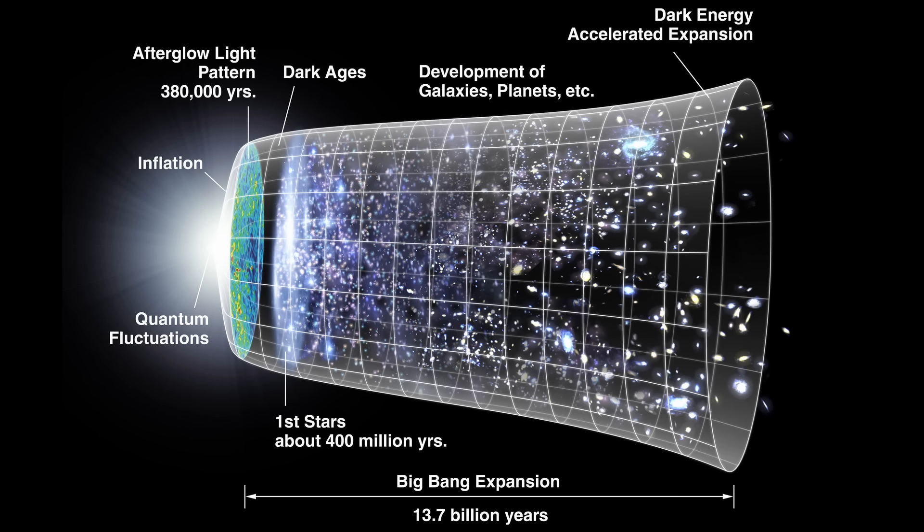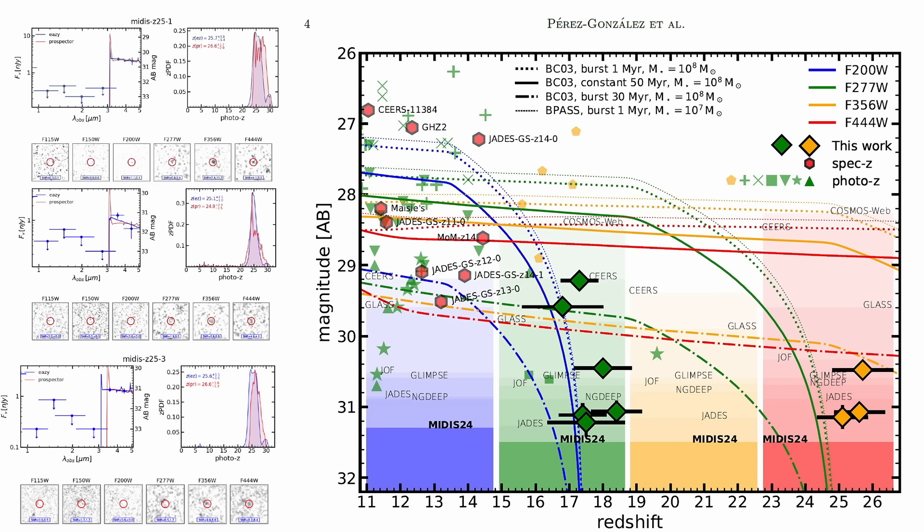The answer lies in what JWST has actually seen. In a single Webb deep survey, astronomers have identified not one but three candidate galaxies at extreme redshifts. One lies at 25.4, another at 26, and a third closer to 25, which means we're seeing them just 120 to 110 million years after the Big Bang.